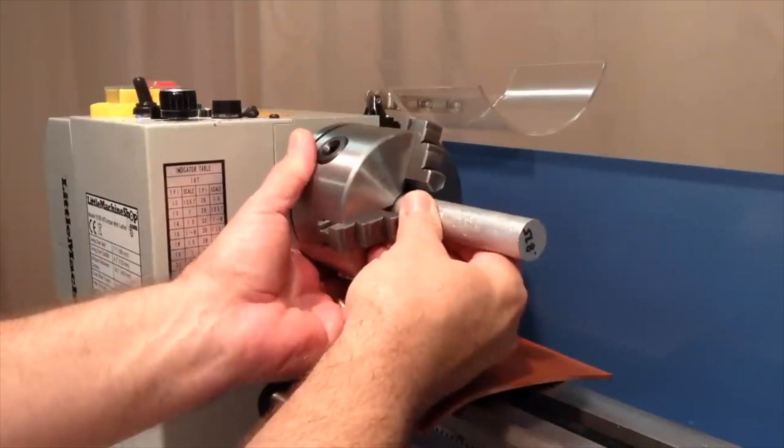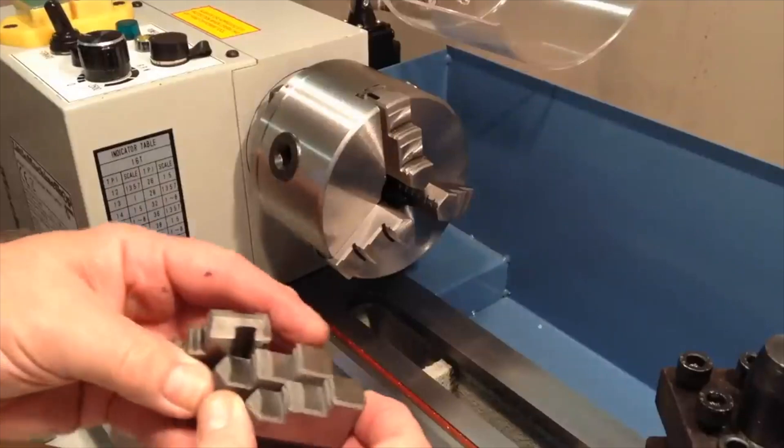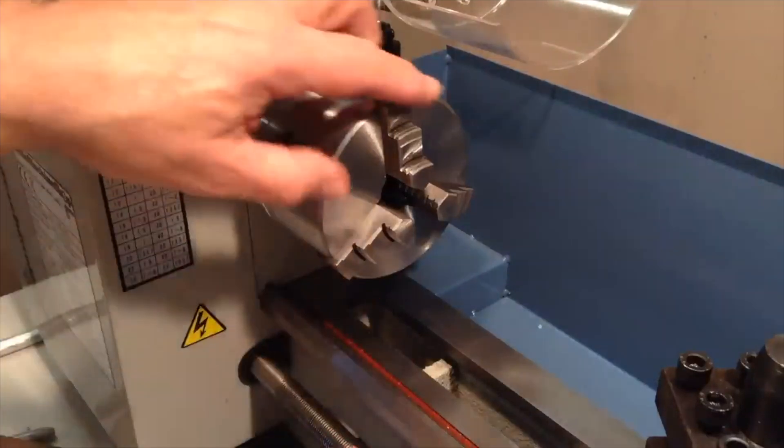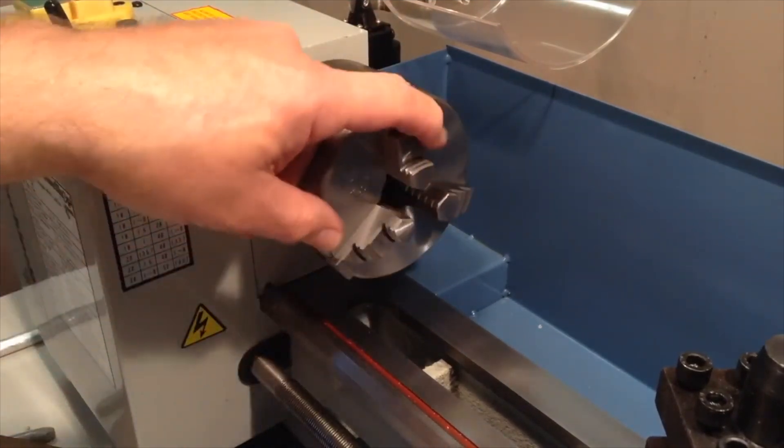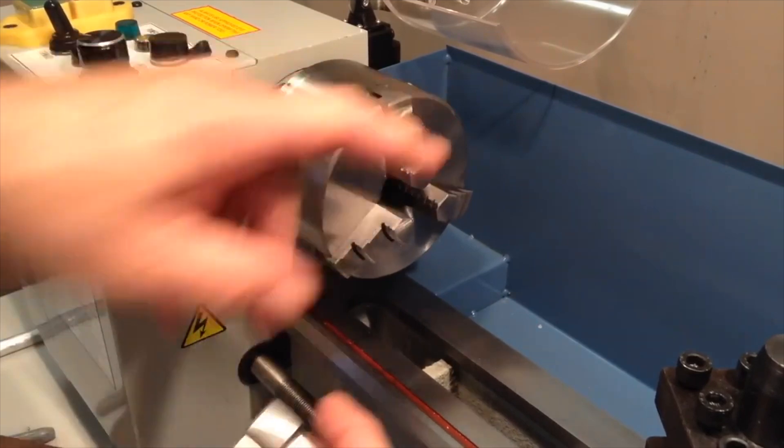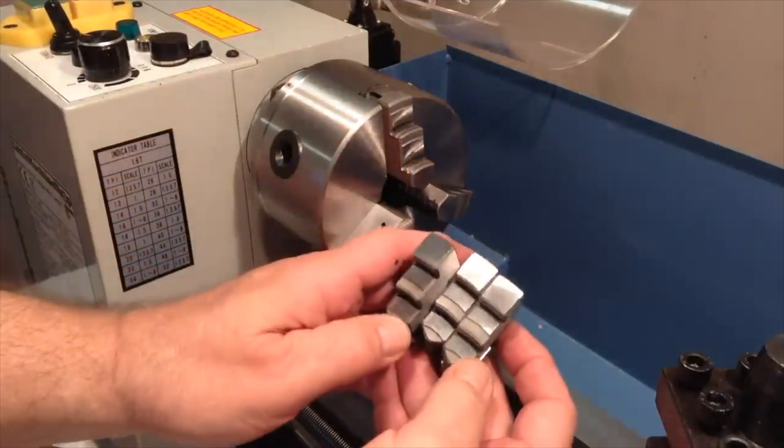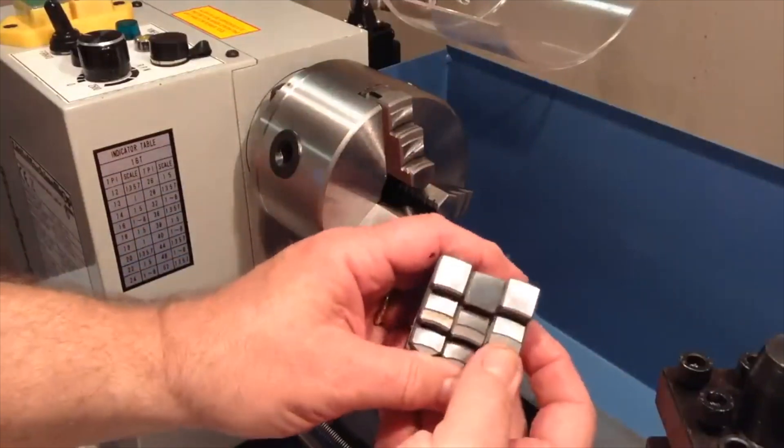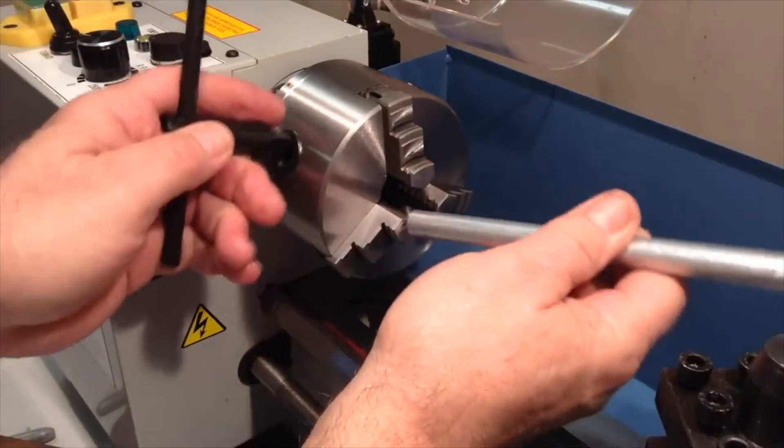Well while we're on the subject of the chuck, the standard three-jaw chuck comes with two sets of jaws. These jaws that are in place typically when you receive it are called the inside jaws, I'll explain why in a minute, and then there's this other set of jaws that are called the outside jaws which typically grip a workpiece on the outer surface.